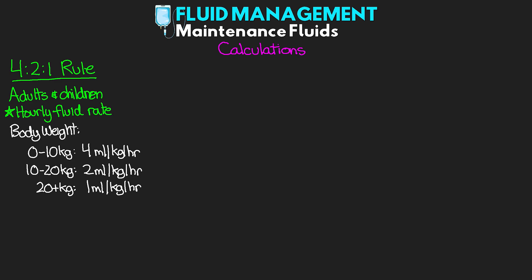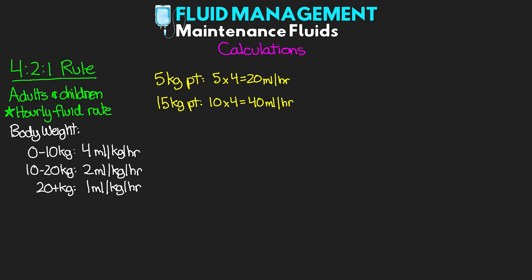Let's work through examples. For a 5 kg patient, we use only the first tier: 5 kg × 4 mL/kg/hour = 20 mL/hour. For a 15 kg patient: the first 10 kg × 4 mL/kg/hour = 40 mL/hour, plus the next 5 kg × 2 mL/kg/hour = 10 mL/hour, giving a total of 50 mL/hour.